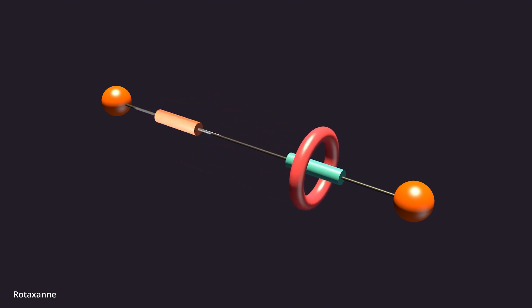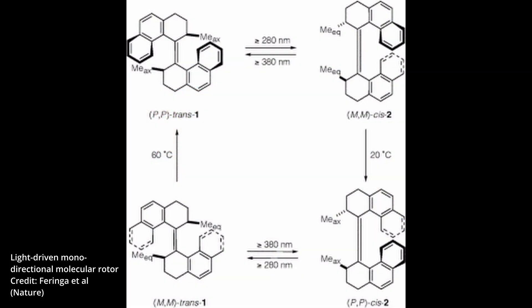And in 1999, Feringa was the first to develop a molecular motor, and even got a molecular rotor blade to spin continuously in the same direction.